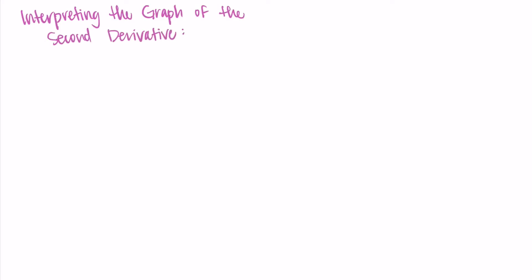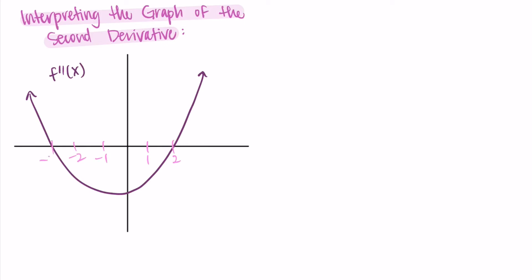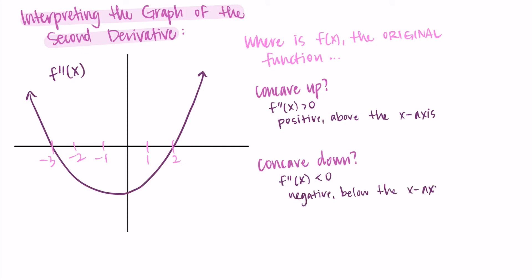To close off the video, let's talk about what we could interpret from the graph of the second derivative. I'm going to draw a simple shape for our second derivative — let's call this f''(x) — and label some points. If I have this graph of the second derivative, I want to know where is the original function f concave up and concave down. Now we have the second derivative directly. The original function is concave up when the second derivative is positive — meaning this graph is above the x-axis — so that's from negative infinity to negative 3 and from 2 to infinity. Concave down is where the second derivative is negative — below the x-axis — so from negative 3 to 2.